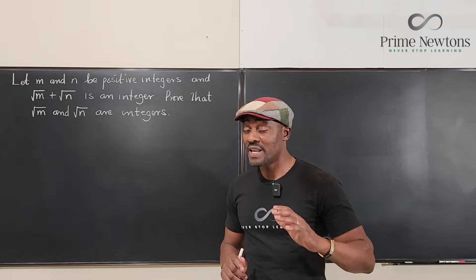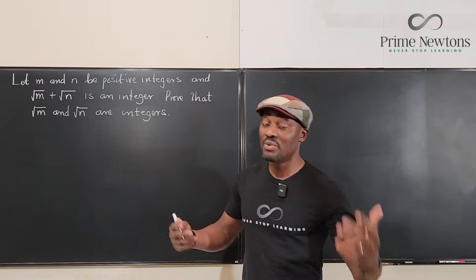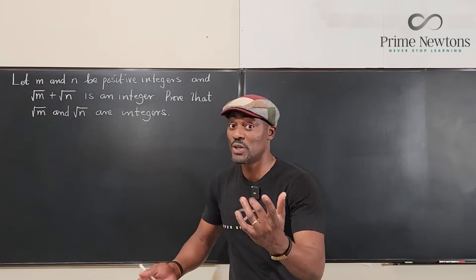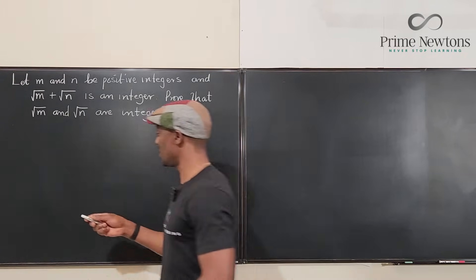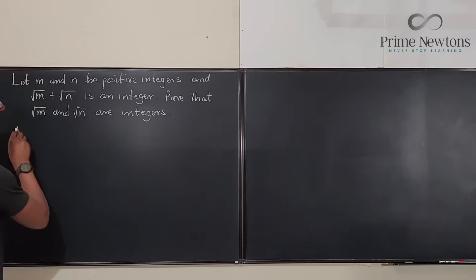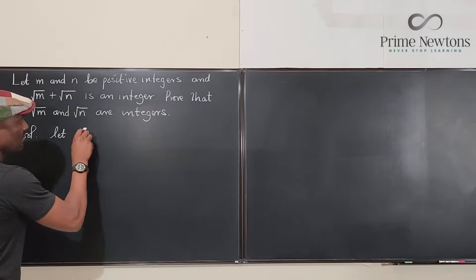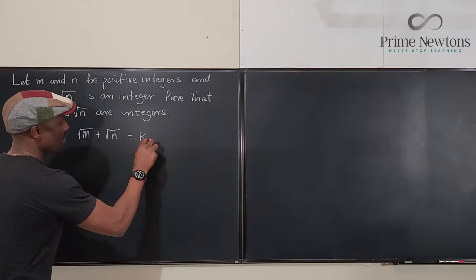So we know that m could be any positive integer, n could be any positive integer, and the sum could be any positive integer which we don't know. So we're just going to choose k to be the sum. We're going to say let √m + √n be equal to some integer k.